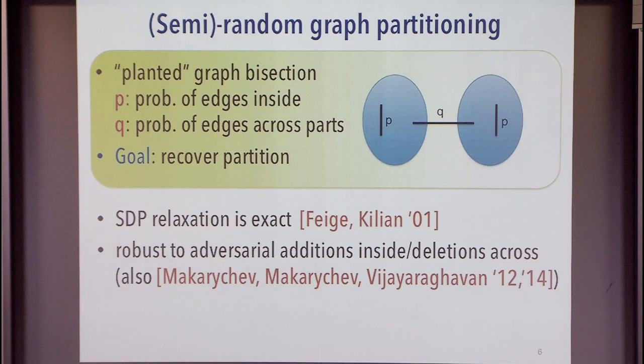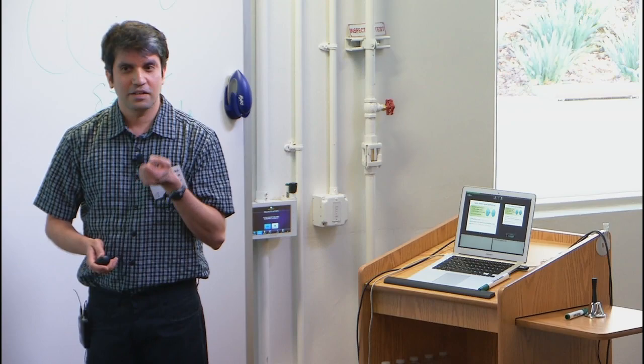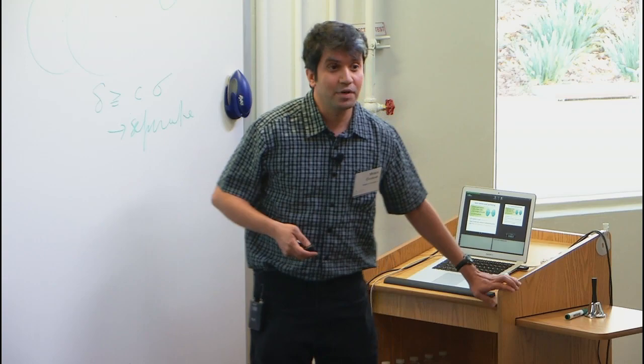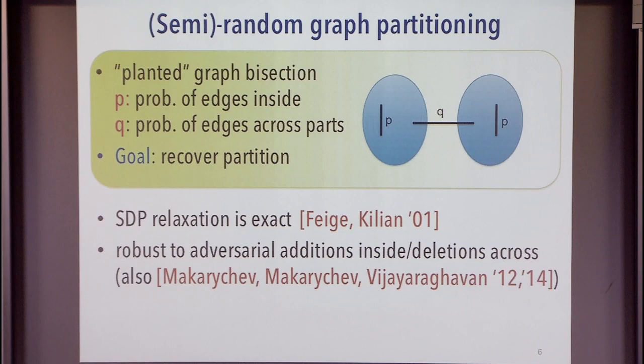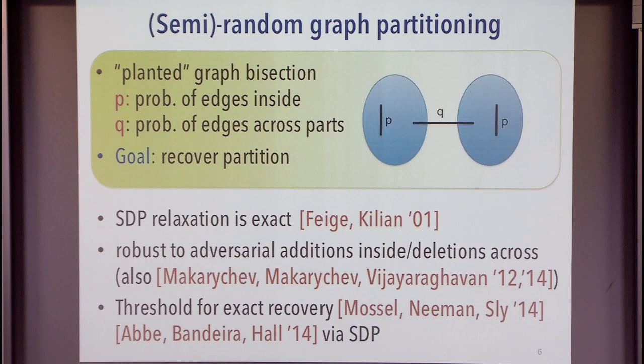With high probability, if you write an SDP relaxation and P and Q are sufficiently far apart, the SDP relaxation is exact. Why is this useful? Before this, there was other work showing a spectral algorithm by Boppana that recovers this partition. The nice thing about having an SDP is that it's actually robust to adversarial changes — not only can you handle instances described this way, but you can also handle an adversary deleting edges going across or adding edges inside. The SDP doesn't care; it will solve that optimally too.